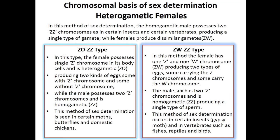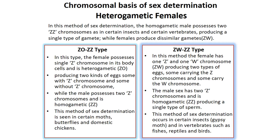The chromosomal basis of sex determination — heterogametic females: in this method, the homogametic male possesses two Z chromosomes, as in certain insects and vertebrates, producing a single type of gamete. Females produce dissimilar gametes, so females are heterogametic and males are homogametic. Here, instead of X and Y, we use the letters Z and W. There are two types of heterogametic female.